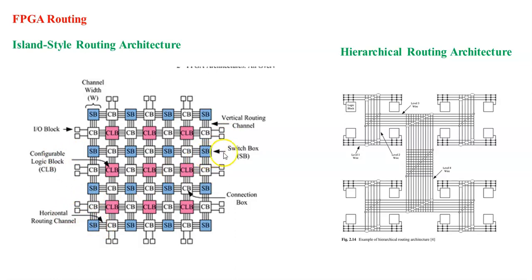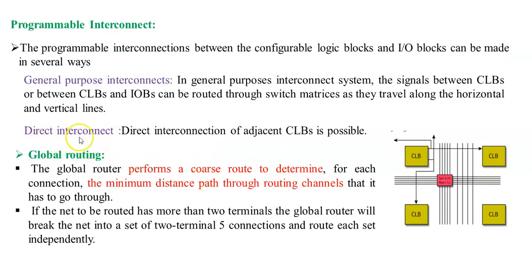Switch boxes as well as connection boxes are also available for connecting CLBs and IO ports. Next is direct interconnect, which makes interconnection between adjacent CLBs in a direct manner. Next, routing methods include global routing and detailed routing. Global routing finds the path between two CLBs or IOBs, performing a coarse route to determine the minimum distance path through the routing channel, finding the distance path between two blocks using algorithms before performing the routing.